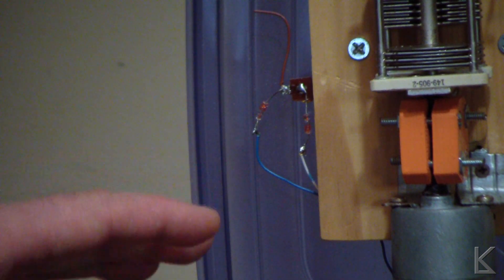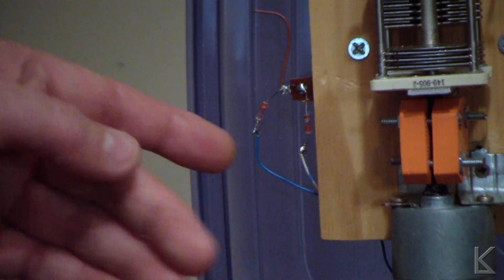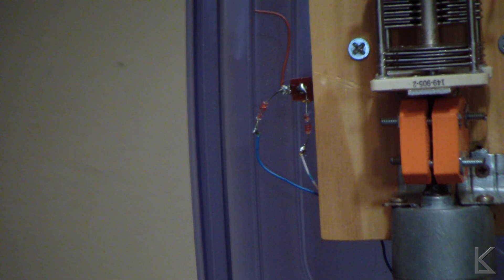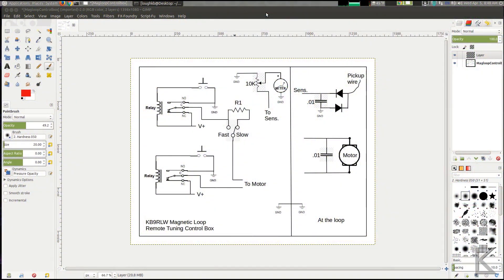And that really counts when you're doing QRP. So that's the mechanical side of it here at the loop end. Now the control box, we'll go take a look at the schematic for that.